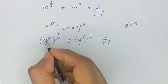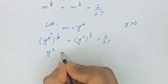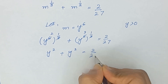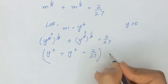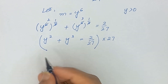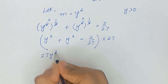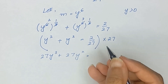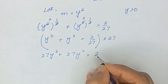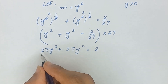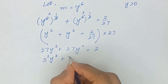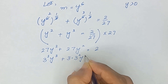So (1/3)×6 = 2 and (1/2)×6 = 3, giving us y squared plus y cubed equal to 2/27. To remove the denominator, we multiply the whole equation by 27, so it becomes 27y cubed plus 27y squared equal to 2. We can write 27 as 3 cubed, so this becomes 3³·y³ + 3·3²·y² = 2.